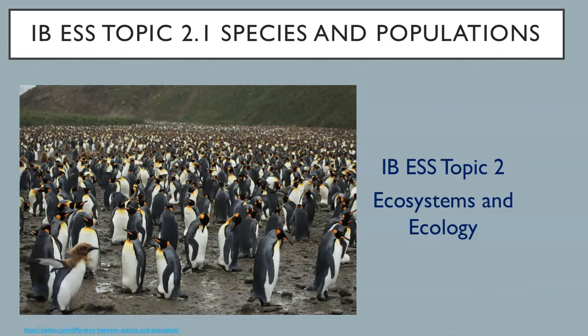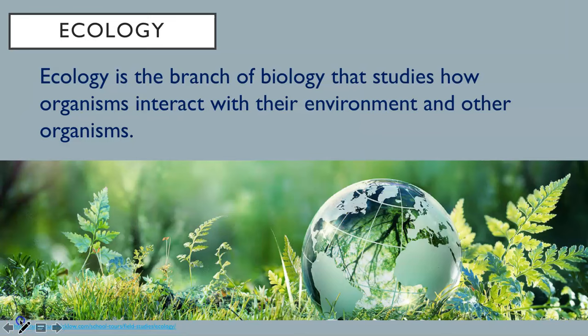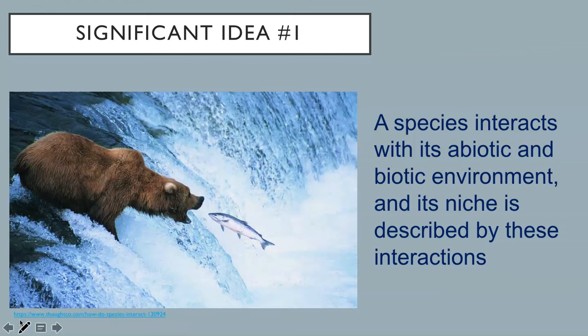This movie covers Subtopic 2.1, Species and Populations, under the main topic of IBESS Topic 2, Ecosystems and Ecology. Topic 2 in IBESS covers the Ecology portion of this course. Ecology is the branch of biology that studies how organisms interact with their environment and other organisms. The significant idea number one for this subtopic is that a species interacts with its abiotic and biotic environment, and its niche is described by these interactions. Let's start with some definitions.